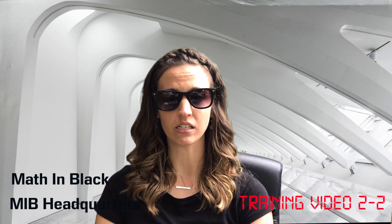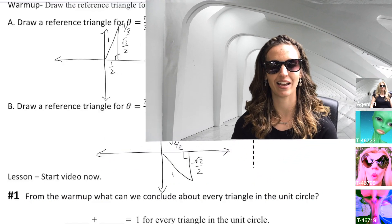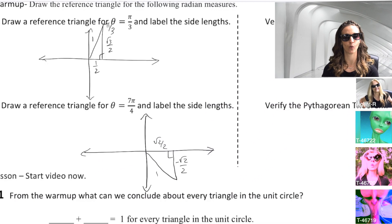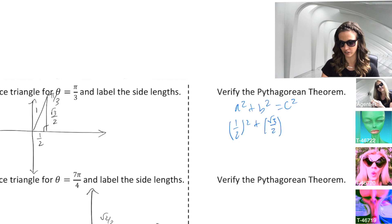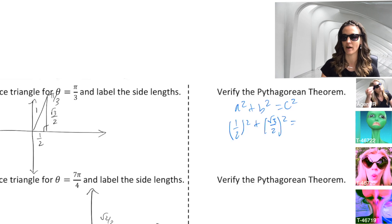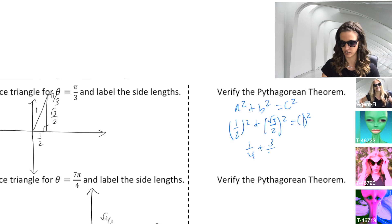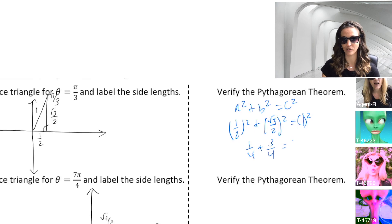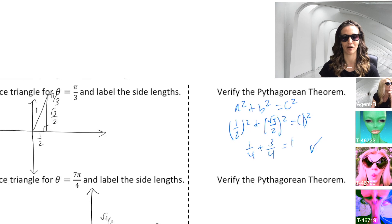Training video 2-2. Trainees, have you completed your reference triangles in your warm-up? Let's verify the Pythagorean theorem for both of these together. The Pythagorean theorem states a² + b² = c², so side² + side² equals the hypotenuse squared. In our case, we take 1/2 as one leg squared, plus √3/2 as the other leg squared, equals the hypotenuse 1 squared. 1/2 squared is 1/4; √3/2 squared gives 3/4. So 1/4 + 3/4 = 1. We have confirmed the Pythagorean theorem for the reference triangle at π/3 radians.